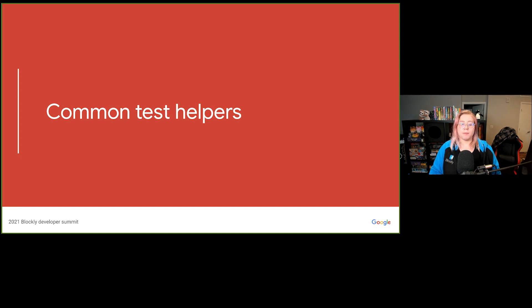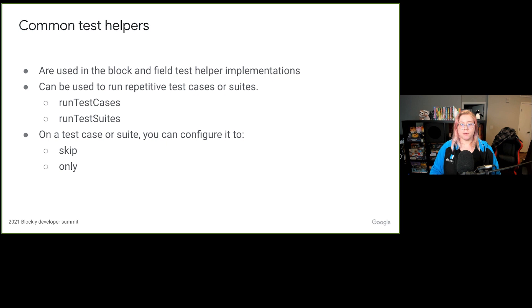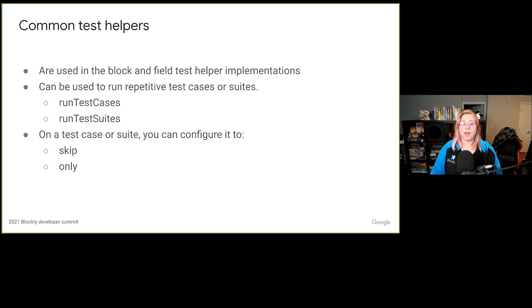Finally, let's talk about some common test helpers. The common test helpers provided by DevTools are what's used in the block and field test helper implementations. They are convenient functions that can also be used to run repetitive test cases or suites. One feature available in the common test helpers, as well as in the field and block test helpers, is that any test suite or test case can be configured to run using the Mocha keyword 'only' or 'skip'. The 'only' keyword is very useful for debugging, and the 'skip' keyword can be used to write tests that don't yet pass due to a bug, marking them with a to-do comment to unskip after the bug is fixed.